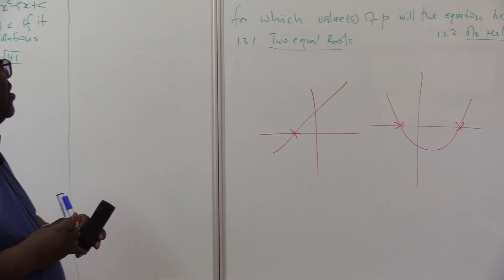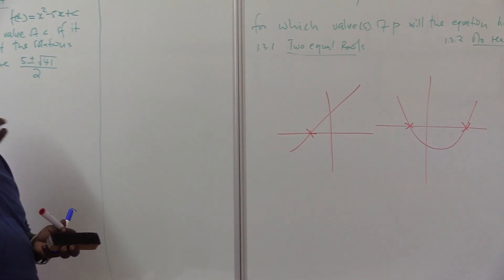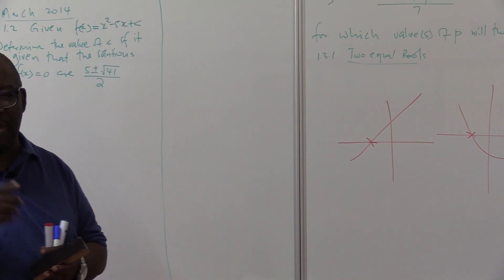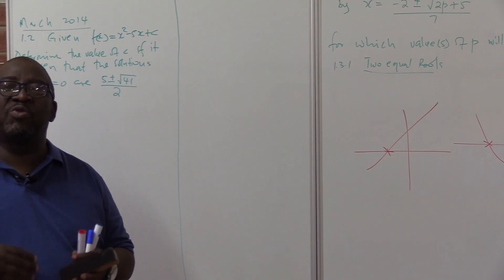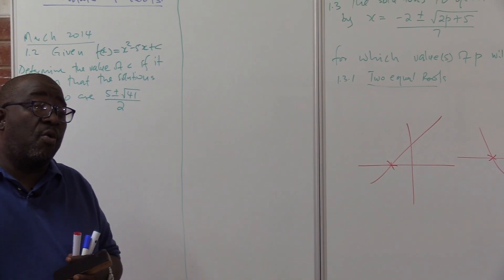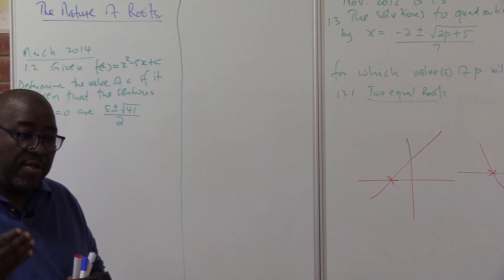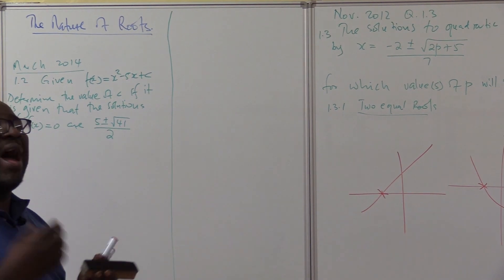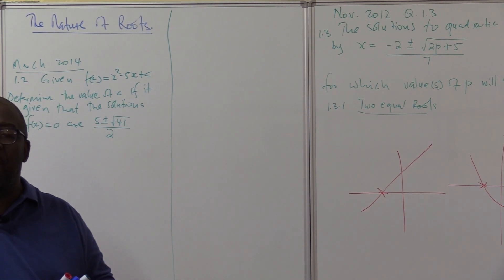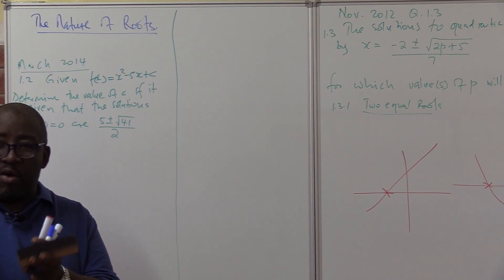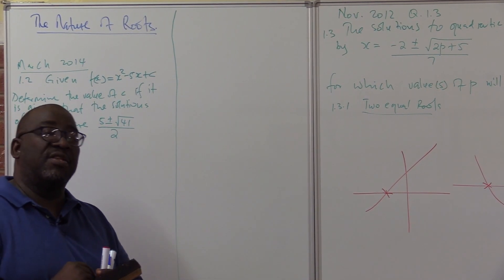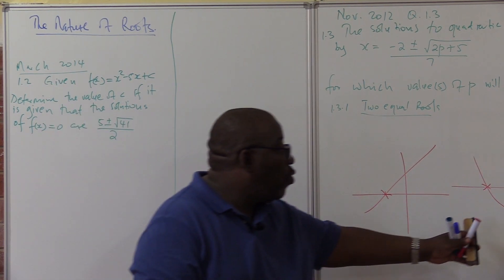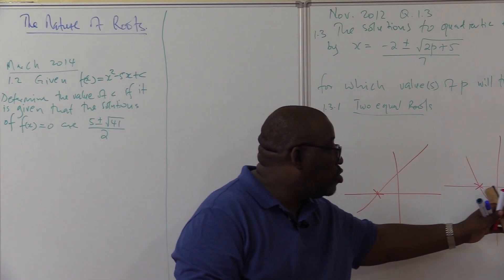So when we talk of this section, the nature of roots, remember it's question one and it's about quadratic. Therefore, we look at the quadratic graph. There are roots in all other graphs, but we only focus on the parabola in this case, the quadratic graph, which has got about two roots.